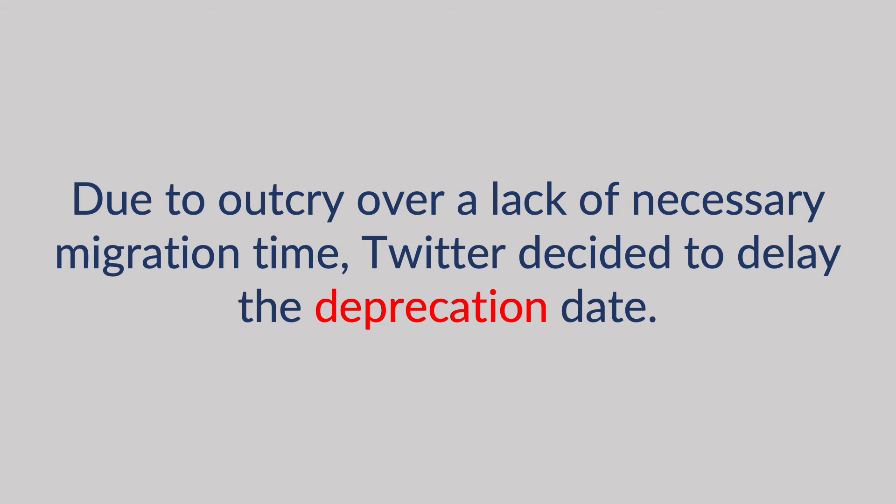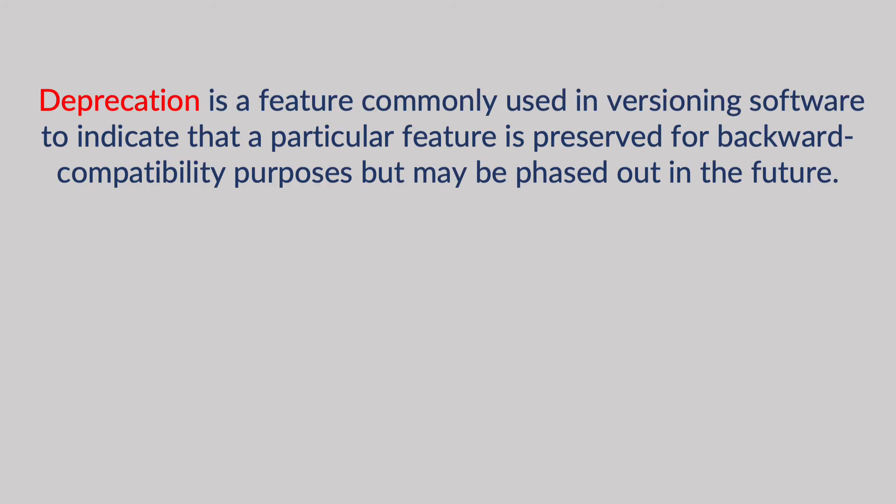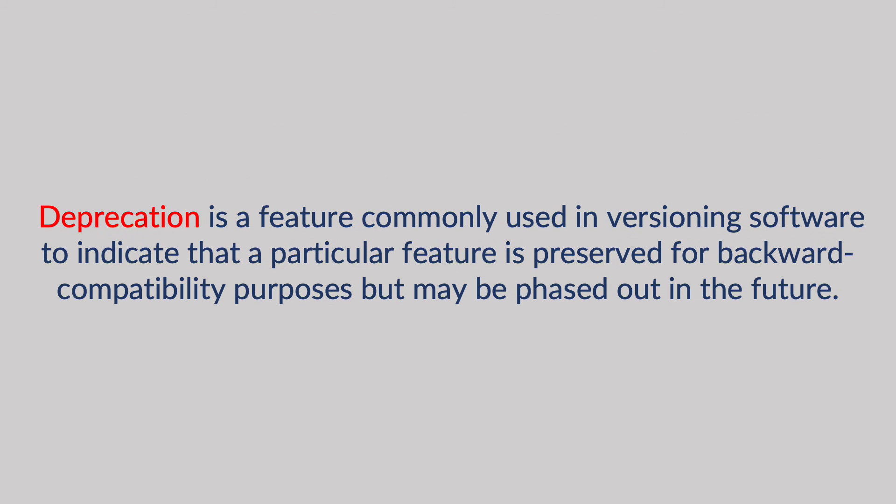Due to outcry over lack of necessary migration time, Twitter decided to delay the deprecation date. Deprecation is a feature commonly used in versioning software to indicate that a particular feature is preserved for backward compatibility purposes but may be phased out in the future.